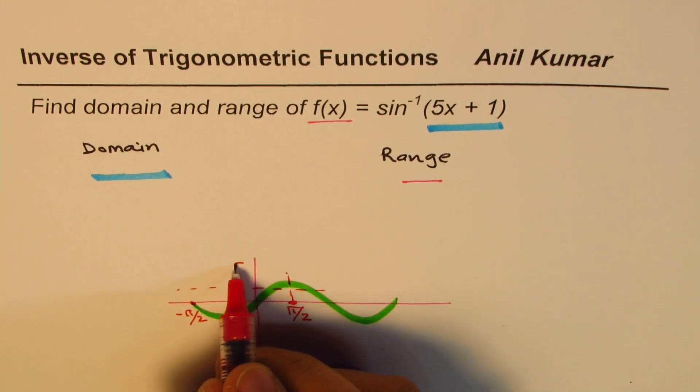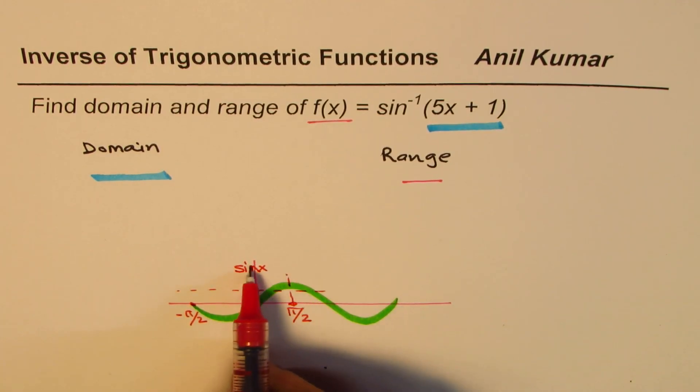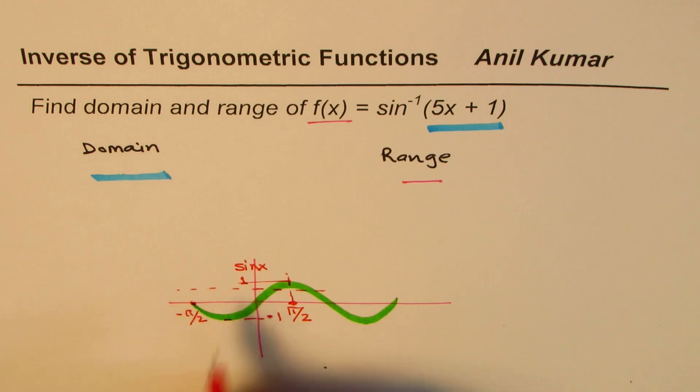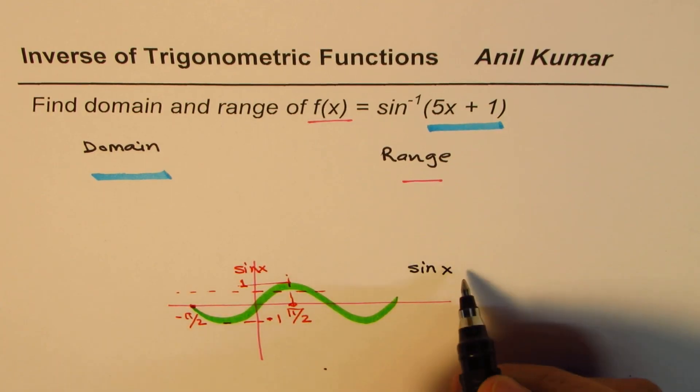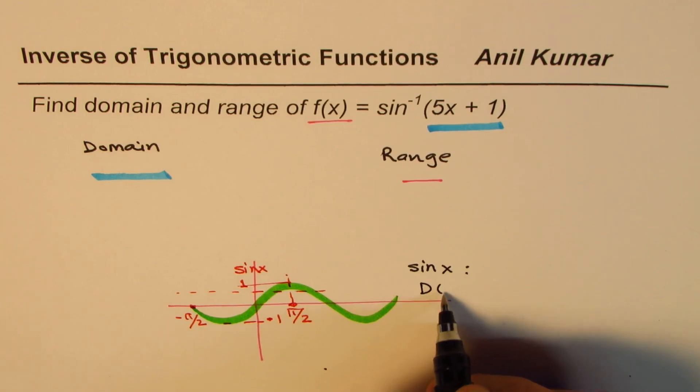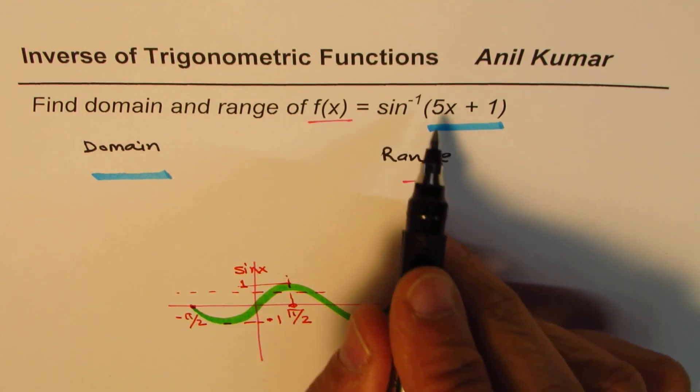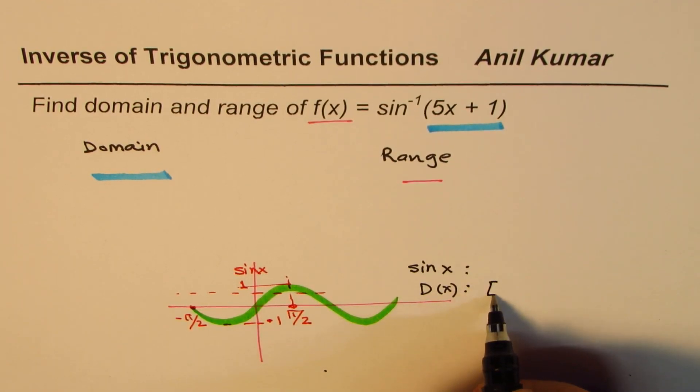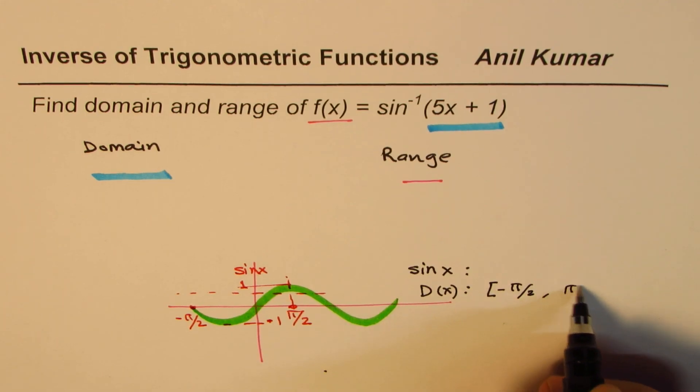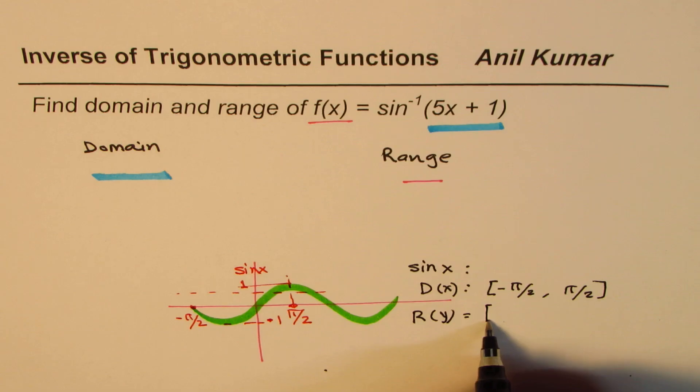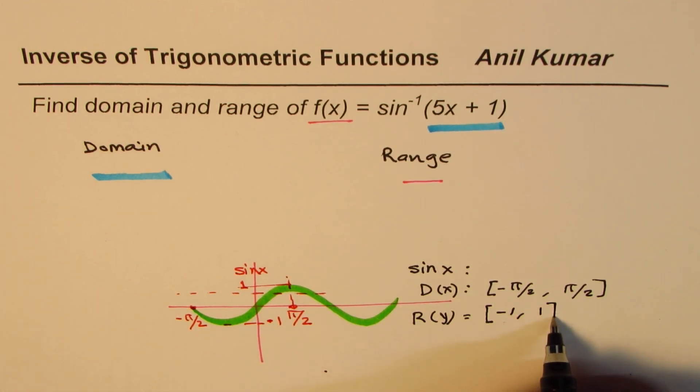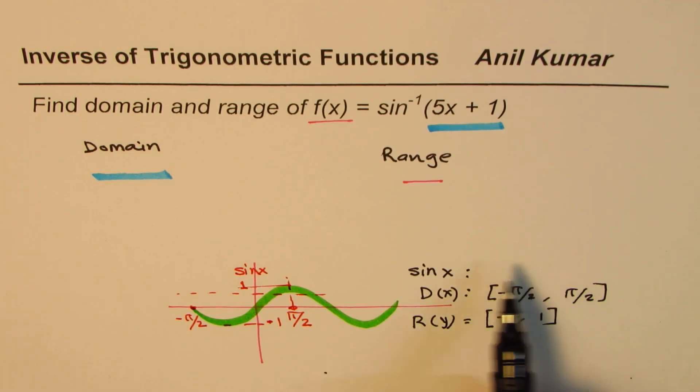So for sine x, the domain is minus pi by 2 to plus pi by 2, and the range is from minus 1 to plus 1. So as far as sine x is concerned, we have domain for sine x, whose inverse is a function, as from minus pi by 2 to plus pi by 2, and range for this function is equal to from minus 1 to plus 1.